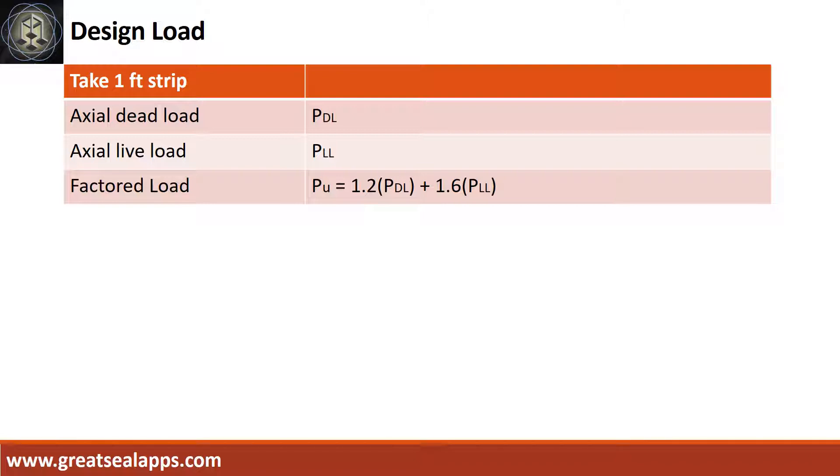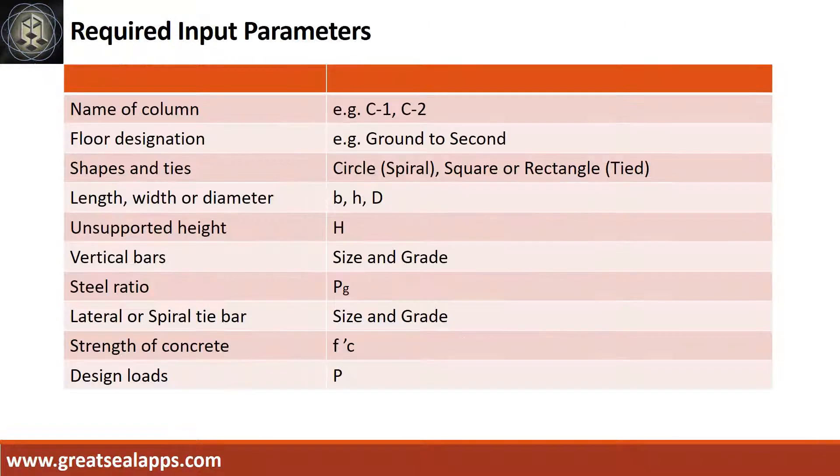Get the factored load from dead load and live load. Enumerate input parameters required: name of column like C1, C2; floor designation like ground to second; shapes and ties; column size like length, width, or diameter; unsupported height; vertical bars with size and grade; steel ratio; lateral or spiral tie bars with size and grade; strength of concrete; and design loads.